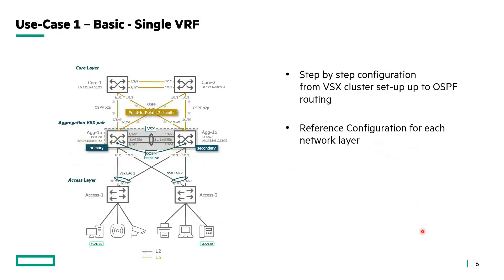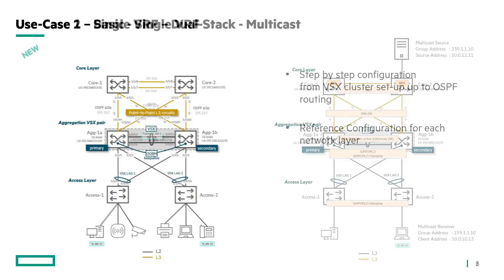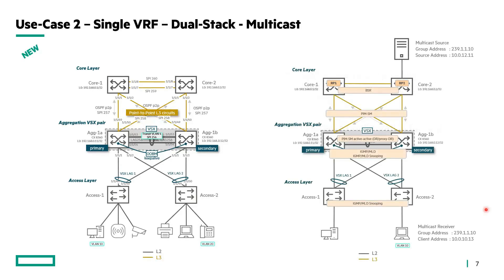The paper covers seven use cases exposed with incremental complexity. We start first with a basic use case for single VRF IPv4 with no multicast, with step-by-step configuration for VSX cluster setup up through OSPF routing, and you will find the reference configuration for each of the network layers.